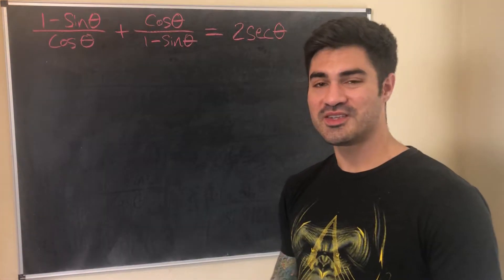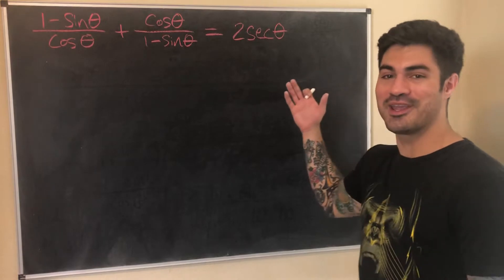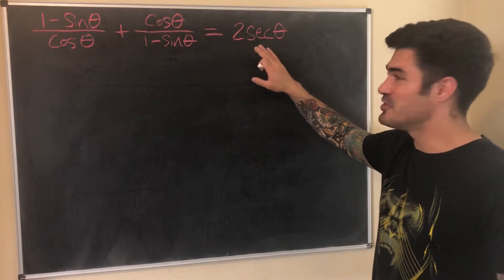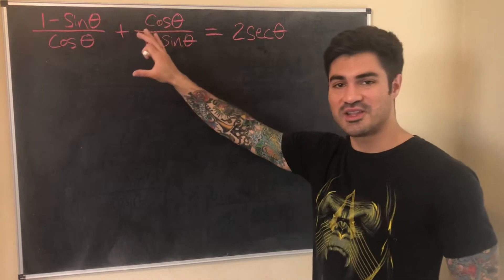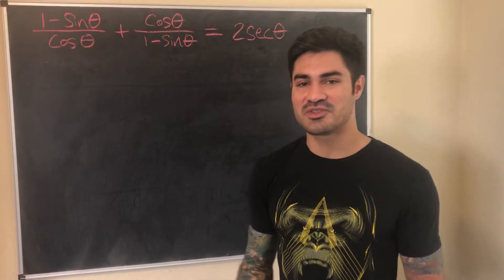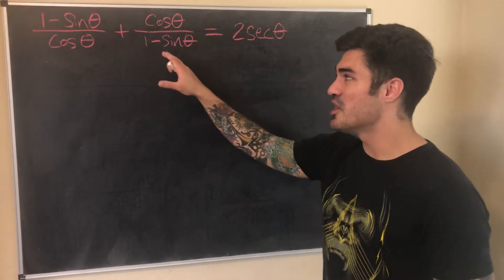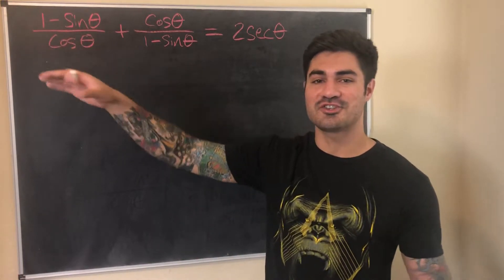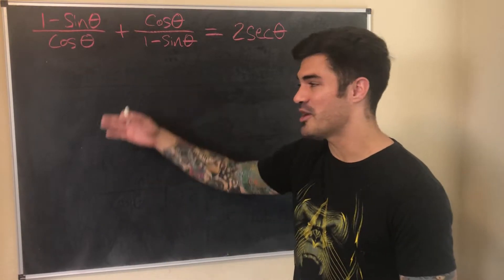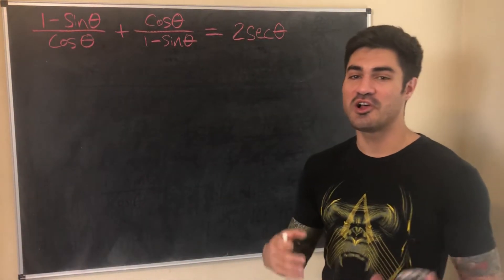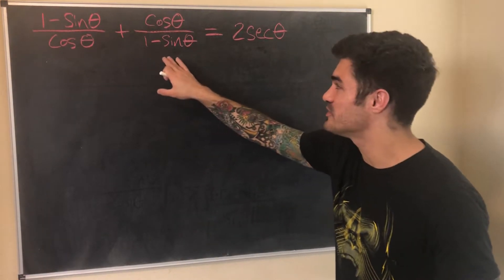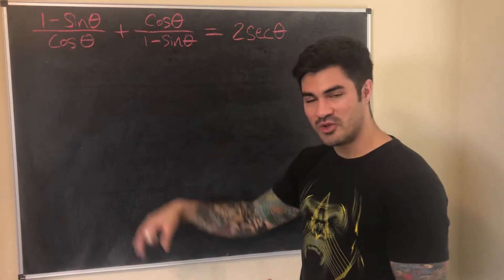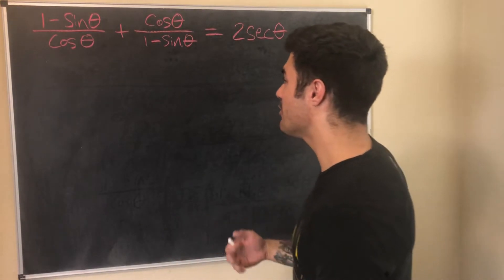In example three, it's clearly the left side that's more complicated — it has two complicated fractions — while the right side is simply 2·secθ. My next strategy is combining fractions by finding a common denominator. With examples that have two fractions on one side and a simpler expression on the other, finding the common denominator and combining usually allows simplification to reach the desired result.